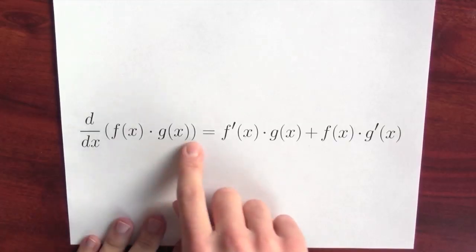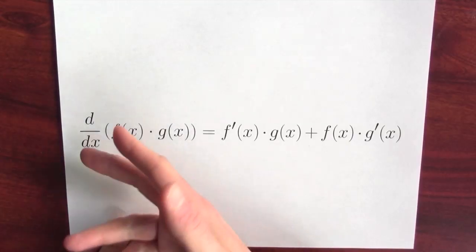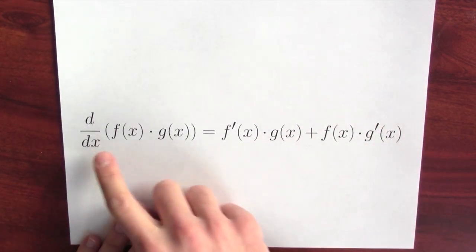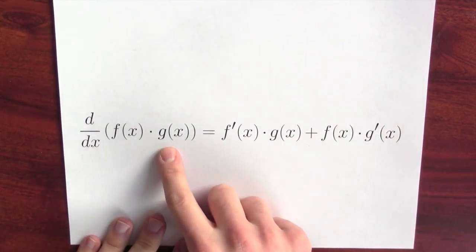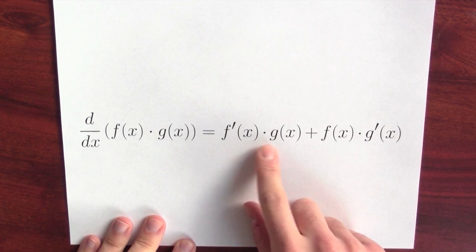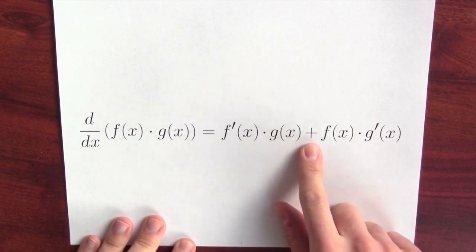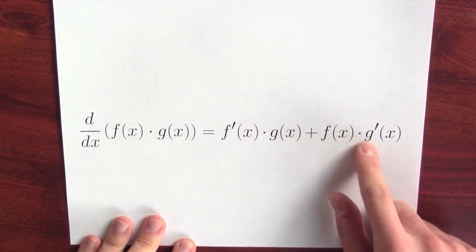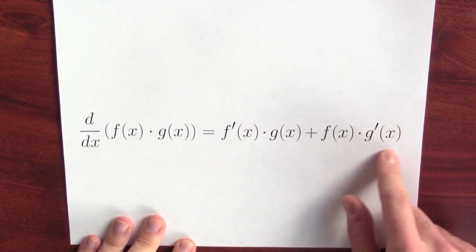What's the derivative of a product of two functions? The derivative of a product is given by the product rule. The derivative of f times g is the derivative of f times g, plus f times the derivative of g.